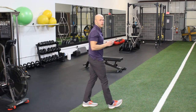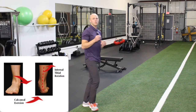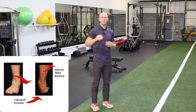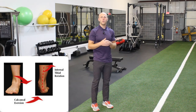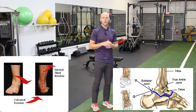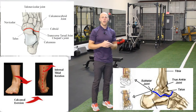As your heel — what we call your calcaneus — hits the floor, it starts to move into eversion, meaning it starts to move out to the side. As your calcaneus everts, it's moving underneath a bone called your talus. Those two joints together make up your subtalar joint, and it moves the subtalar joint's axis of motion into a parallel position to another joint called your transverse tarsal joint.